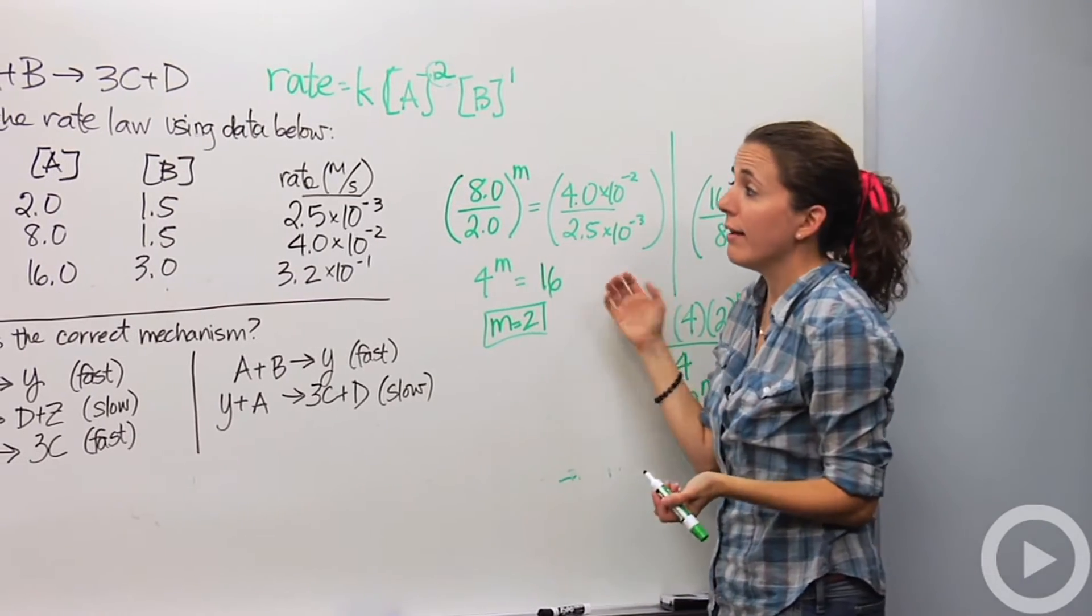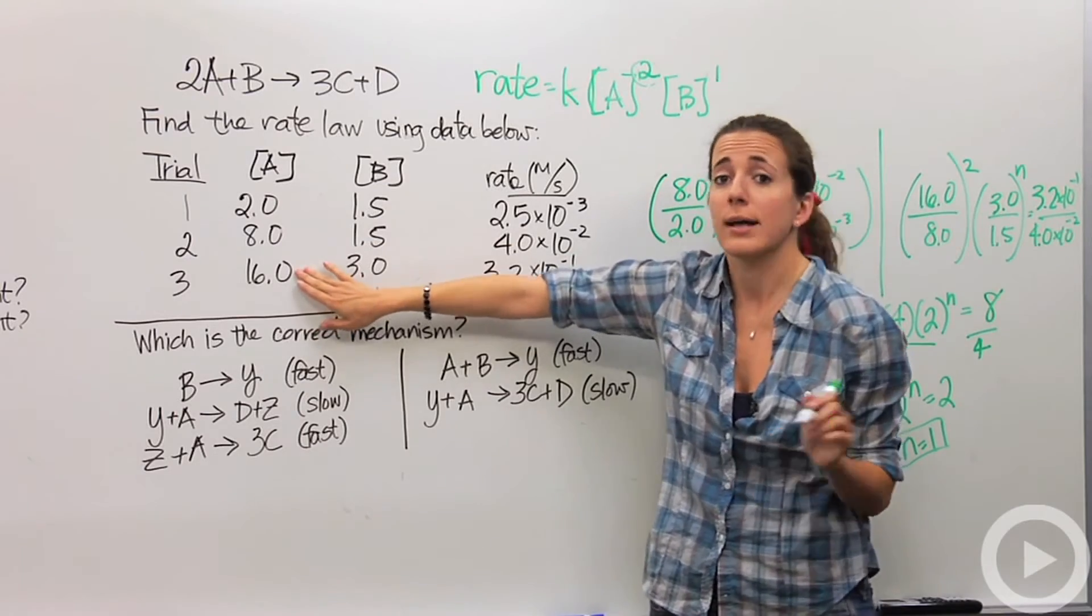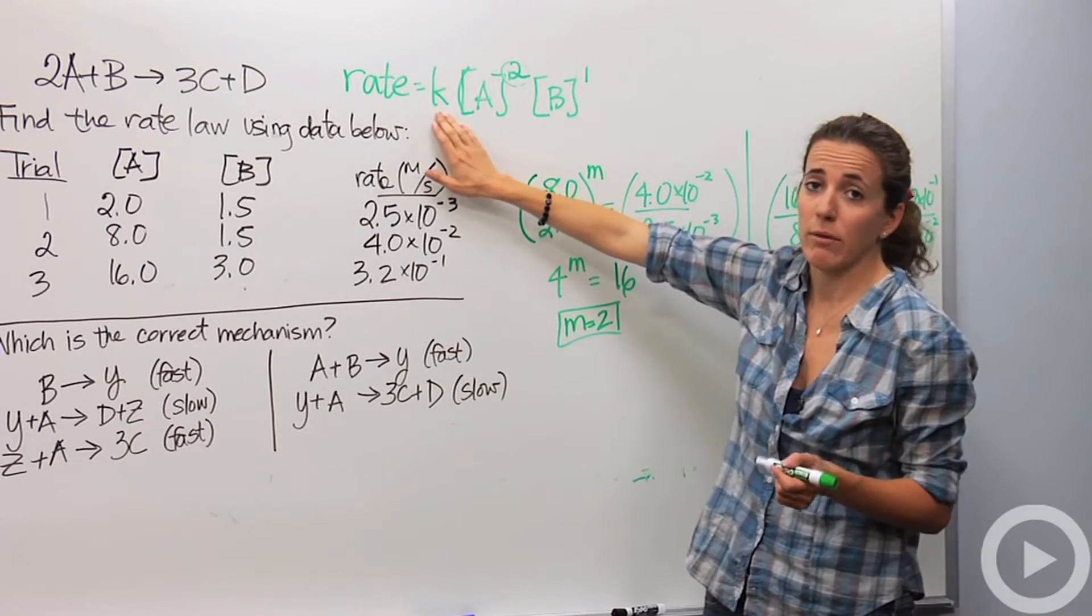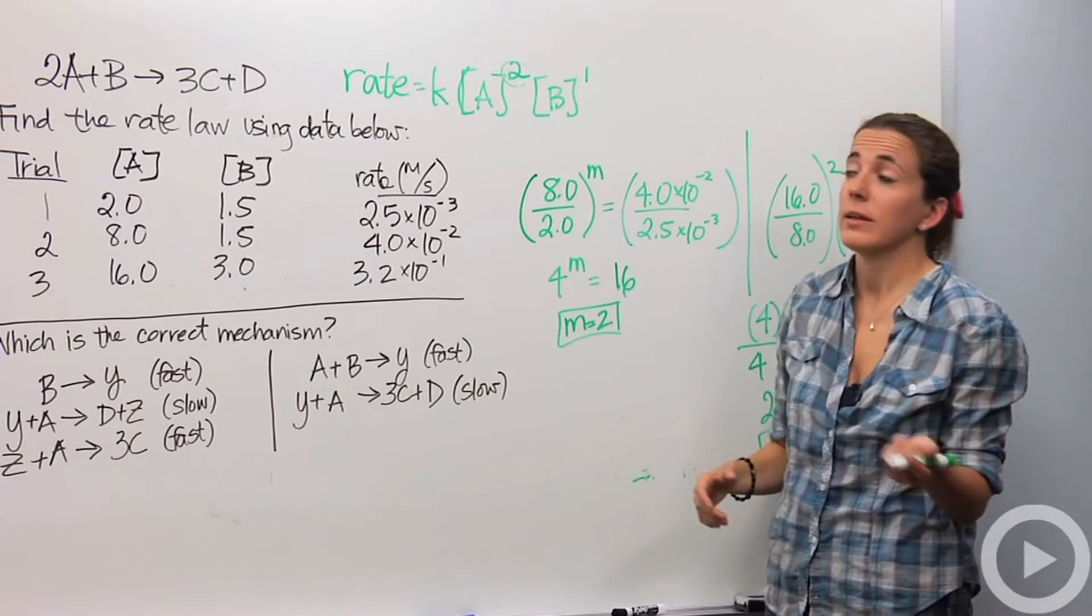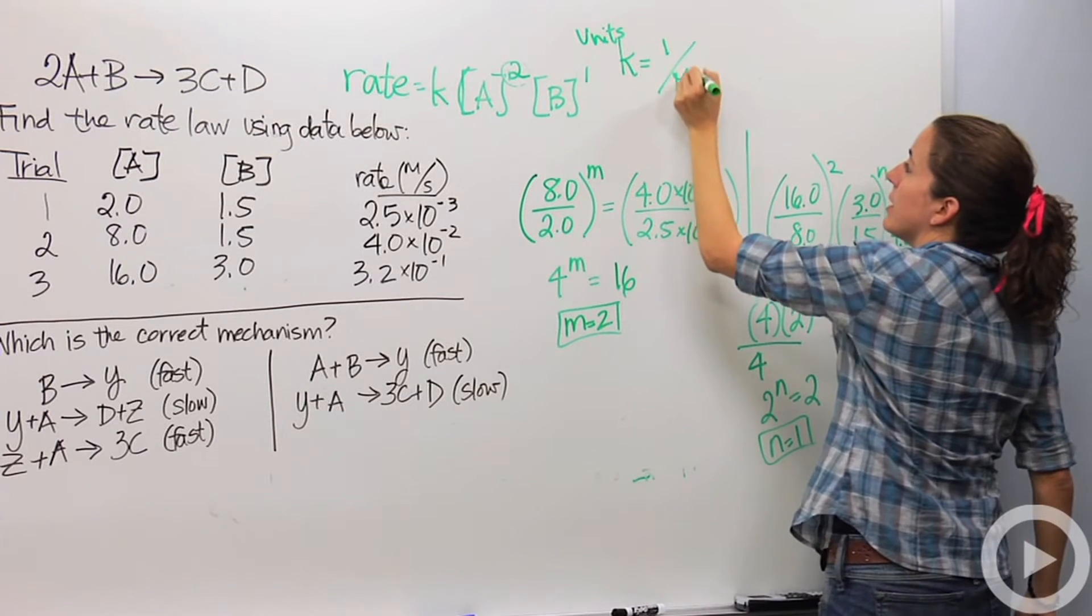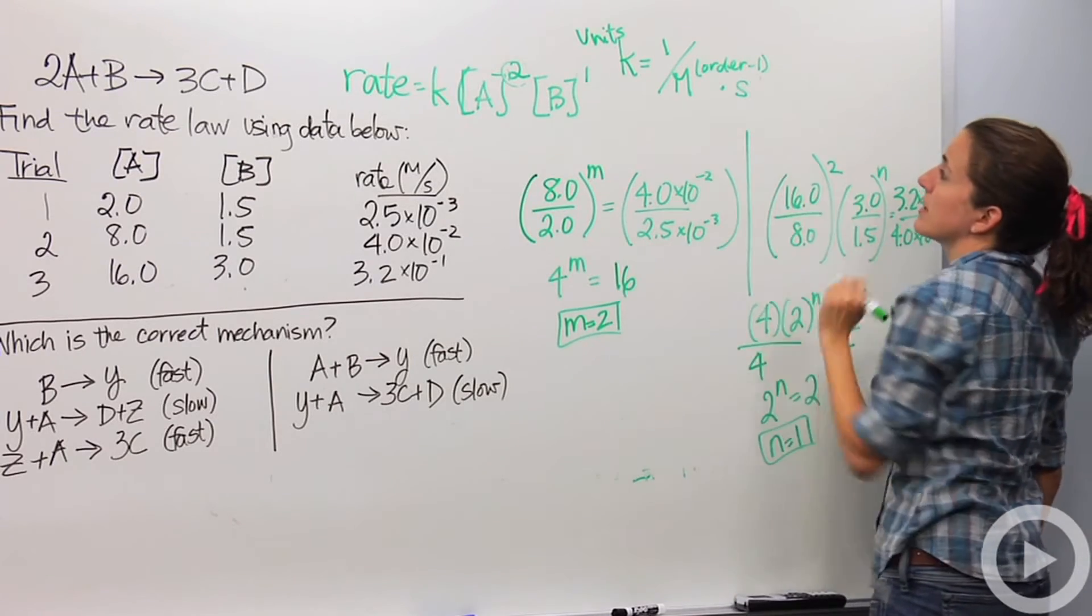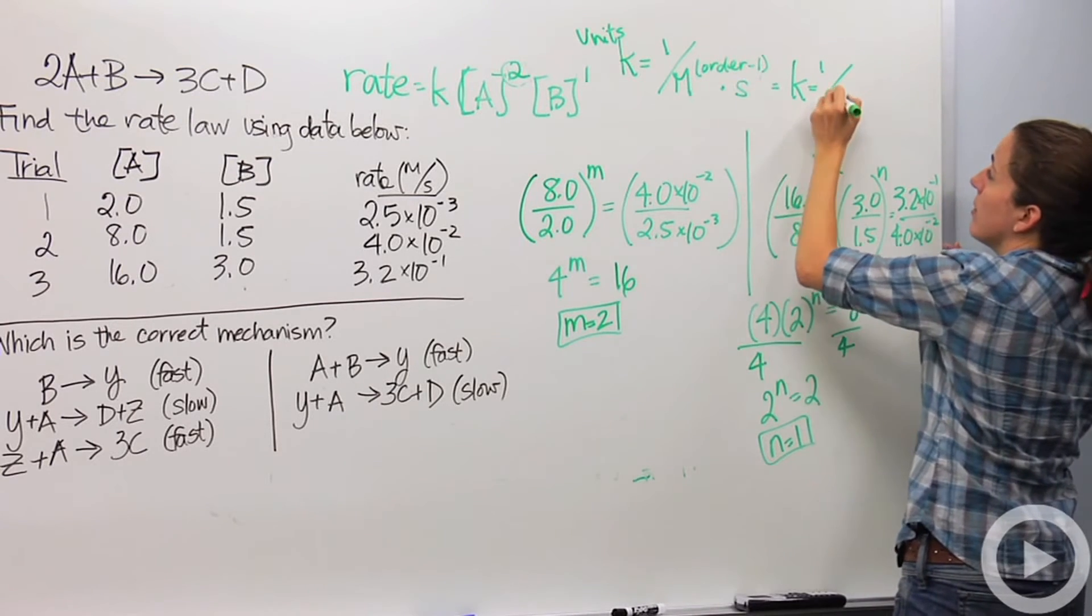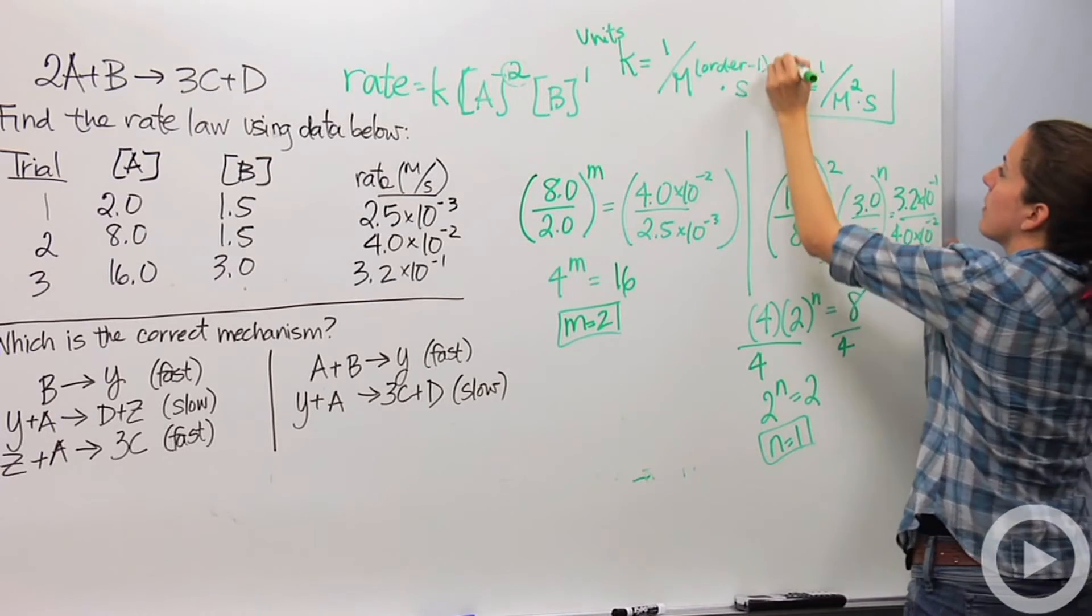That is how you find the rate law if one of your reactants is not changing in your trials. That might be something you might get in a more advanced class, like an honors class. Now we found our rate law, and I would typically have to find our K value - it's a plug and chug problem. But we might need to find the units for K. The units for K are fairly easy. K is equal to 1 over the molarity times the order of the reaction minus 1 times the unit of time. In this case, it's seconds. So the unit for K in this case is 1 over M, the order in this case is third order, 2 plus 1 is 3, so the order minus 1 is 2 times seconds.